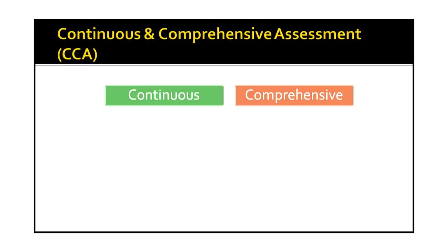So let's see the first question: What is Continuous and Comprehensive Assessment? As you can see, it has two terms — Continuous and Comprehensive. When we say Continuous, it means the regularity of the assessment. Assessment has to take place at regular intervals, and the student should get feedback at regular intervals, not only at the end of the course.